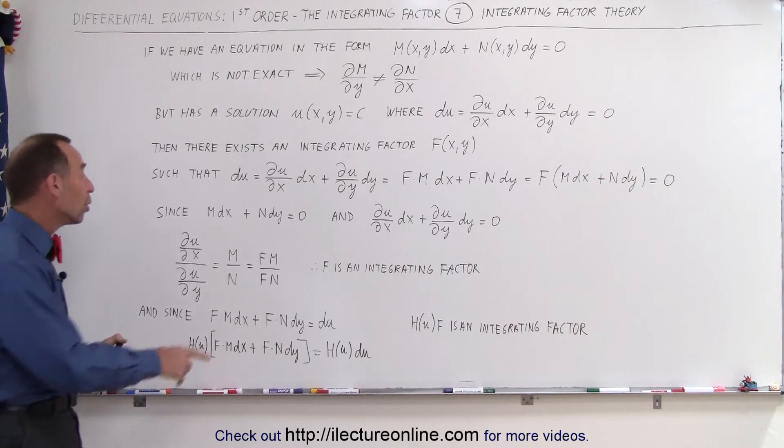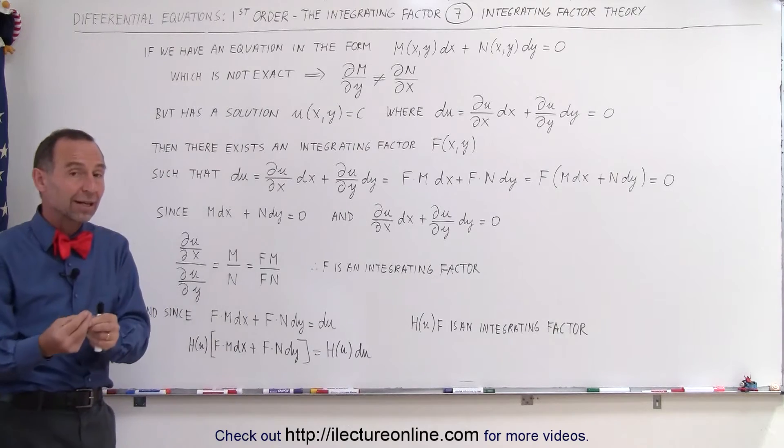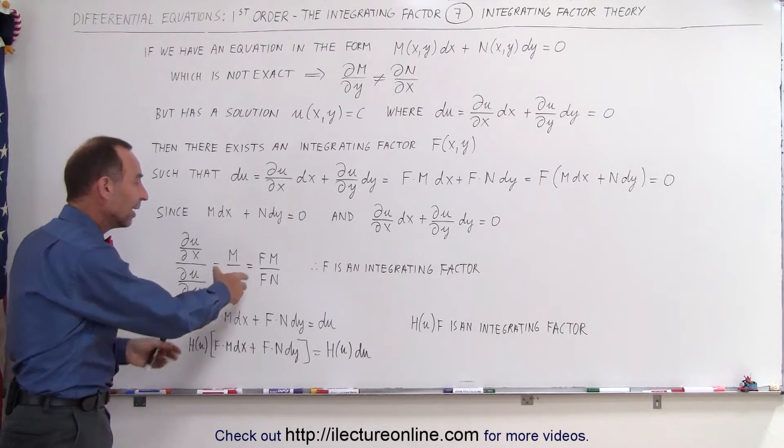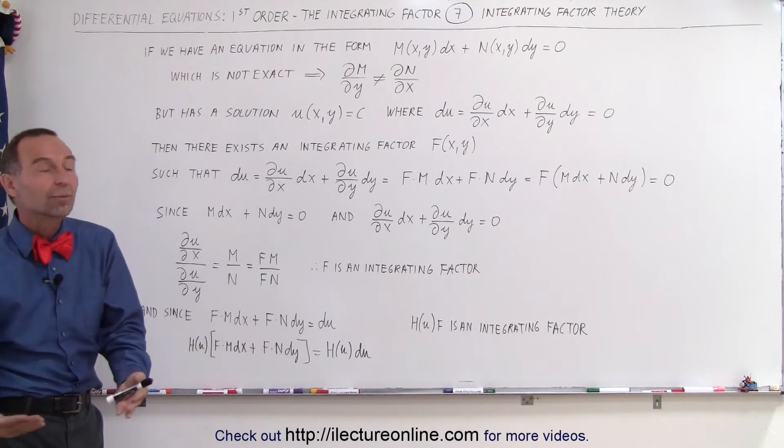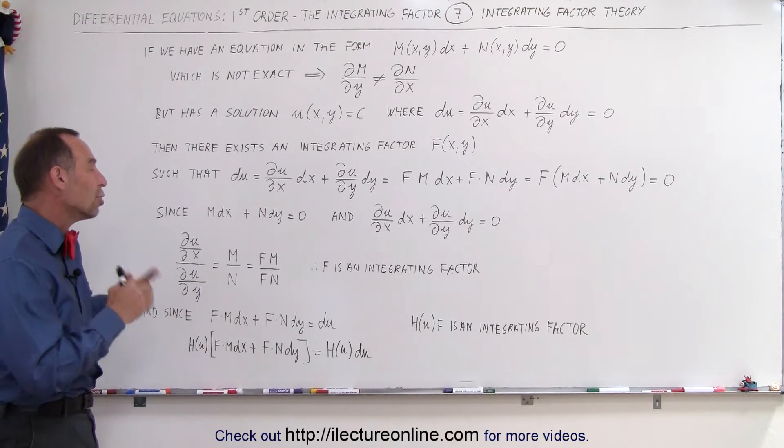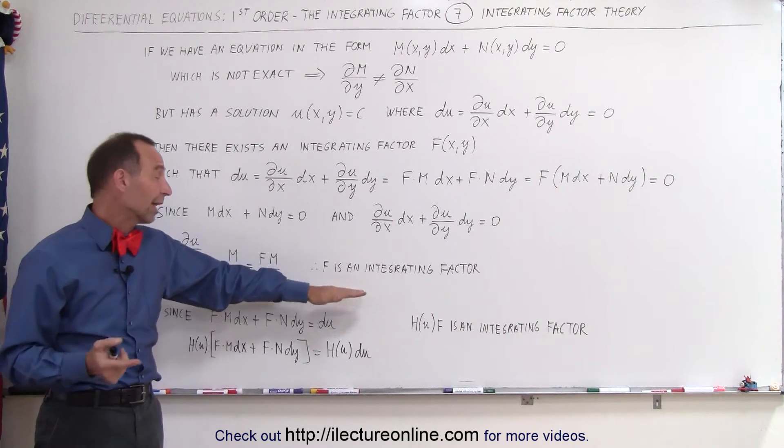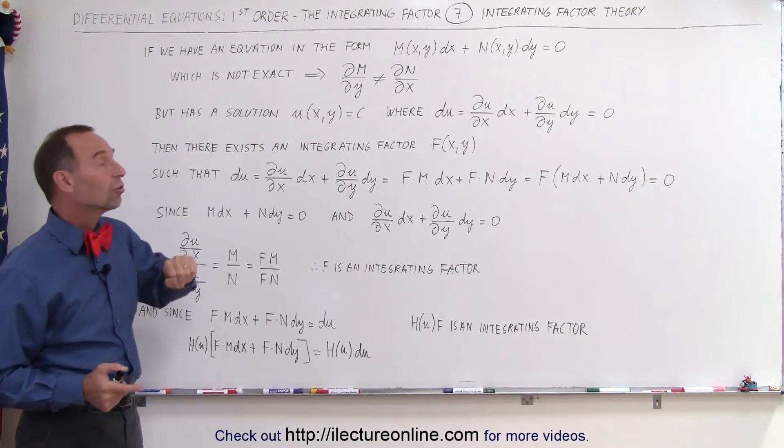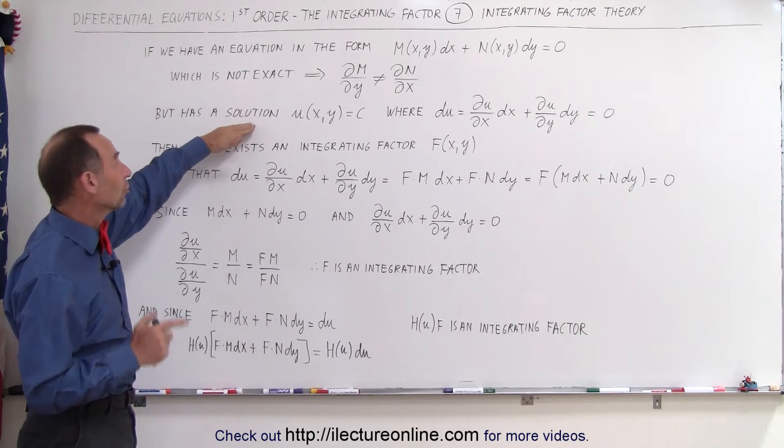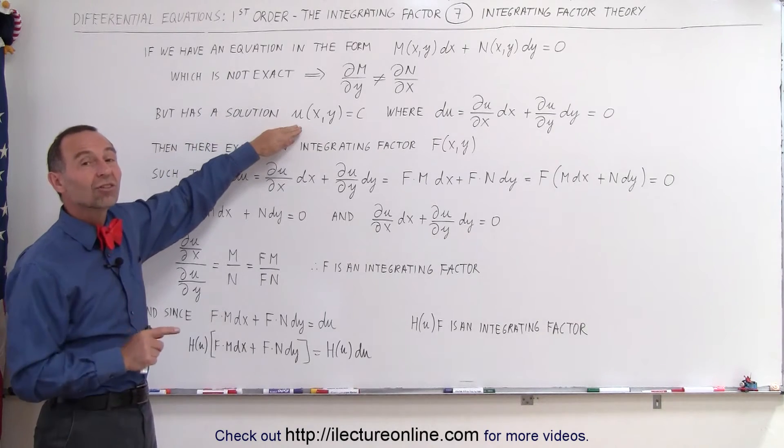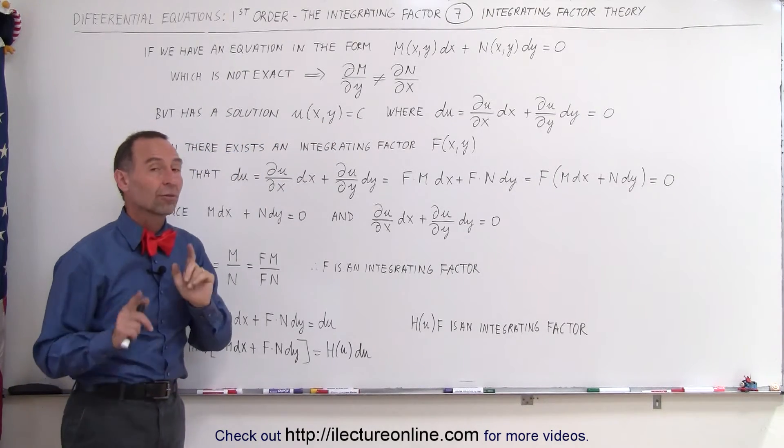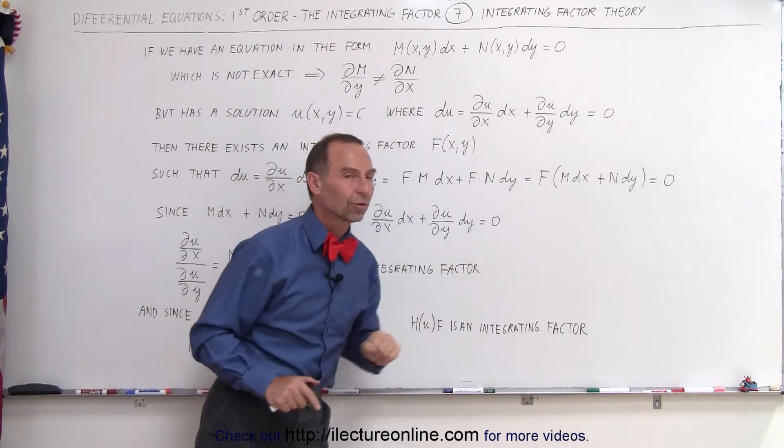And then if we multiply both M and N by the same quantity, the integrating factor, that ratio should still be the same. So therefore we know that F must therefore be an integrating factor. The only condition is that the F will make this an exact equation and that the solution u does exist and that u is equal to a constant because du is equal to 0.